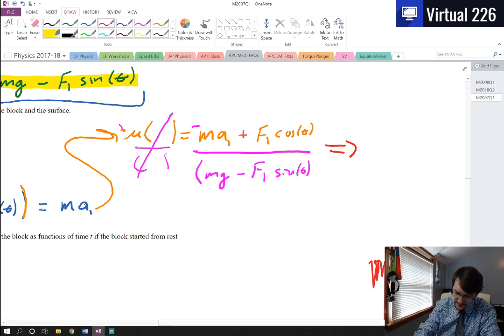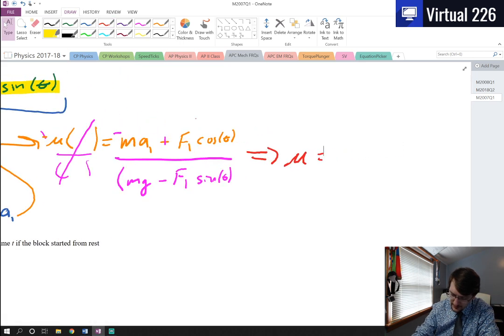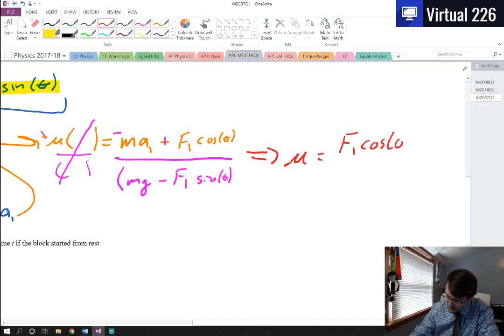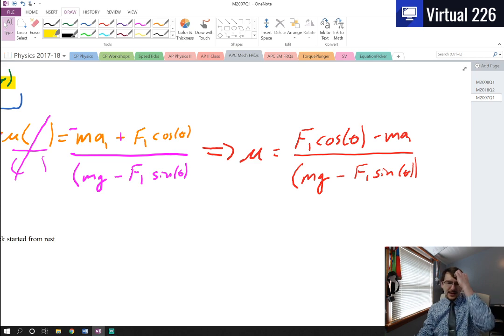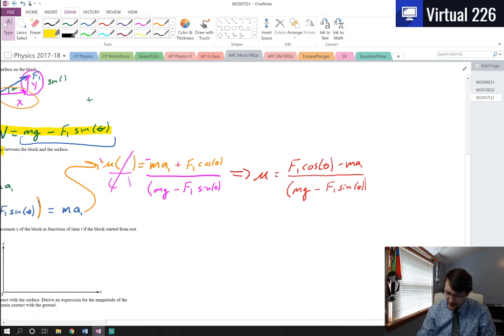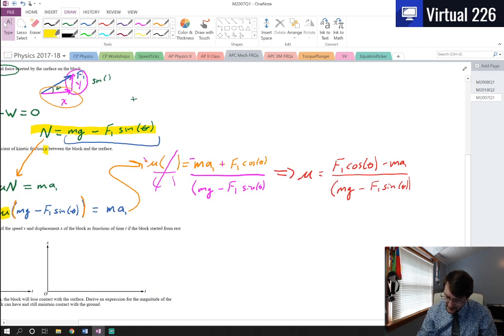So my final answer here can just be read as mu equals, my final answer can be read here as mu equals, and I'll just flip flop those positions, F1 cosine of theta minus M A1 all over, and this is the quantity, M G minus F1 sine of theta. So that's my value for mu. Kind of big, but nothing too crazy there. We're just setting x directions and then kind of working through the math.